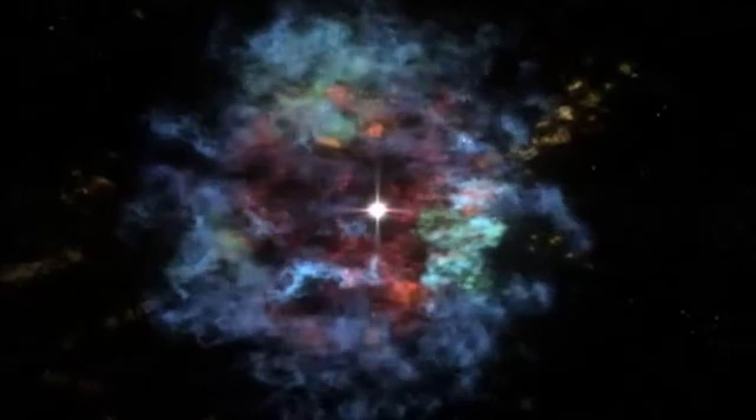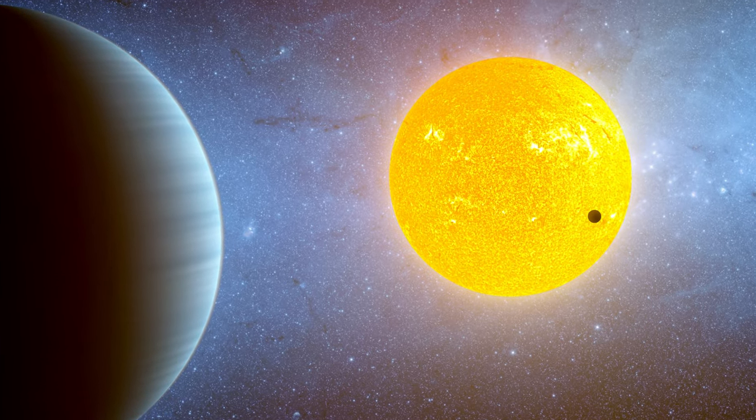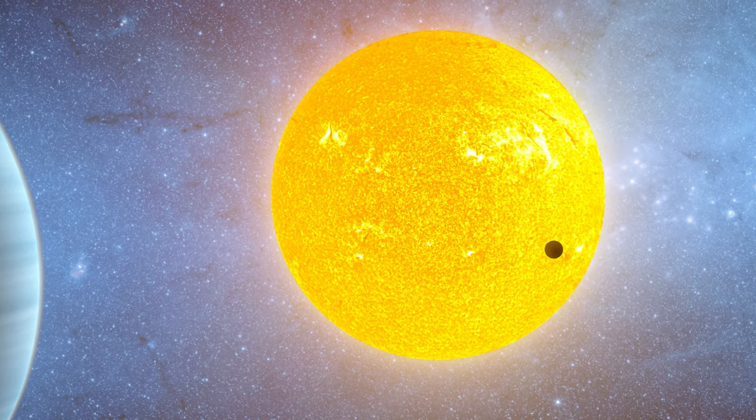K-class stars can live anywhere from 25 billion to 100 billion years. One of the closest stars to us, Alpha Centauri B, is the K-class star.